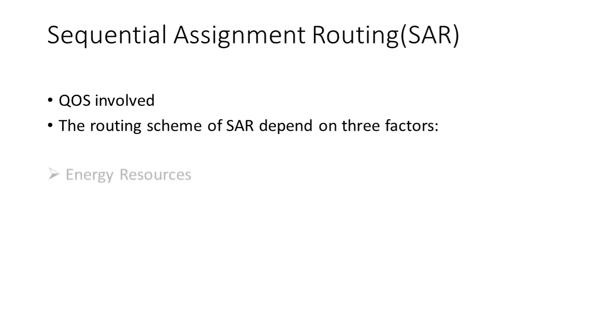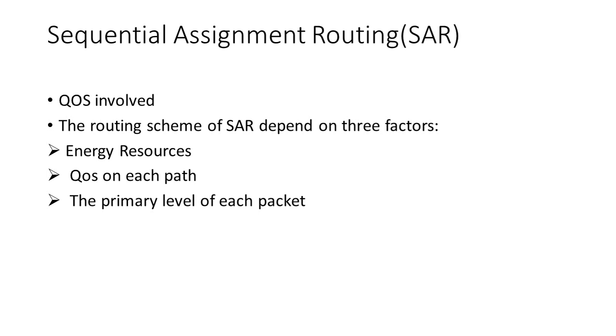Let us discuss the Sequential Assignment Routing Protocol, the SAR Protocol. It is the first protocol which considers QoS in its routing process. It depends on three factors: Energy Resources, QoS on each path, and priority level of each packet. SAR calculates weighted QoS metric as a product of additive QoS metric and a weight coefficient associated with the priority level of the packet. The goal of SAR is to minimize average weighted QoS metric throughout the lifetime of the network.